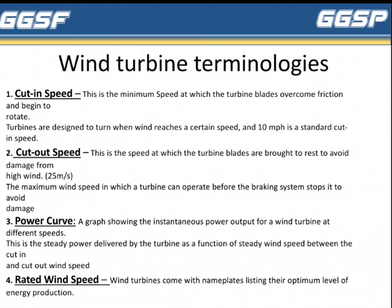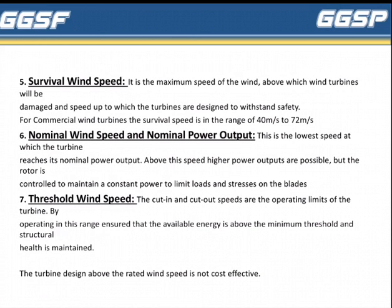Fourth is Rated Wind Speed. Wind turbines come with name plates listing their optimum level of wind production. Next is Survival Wind Speed — the maximum speed of the wind above which wind turbines will be damaged, and the speed up to which the turbines are designed to withstand safely.